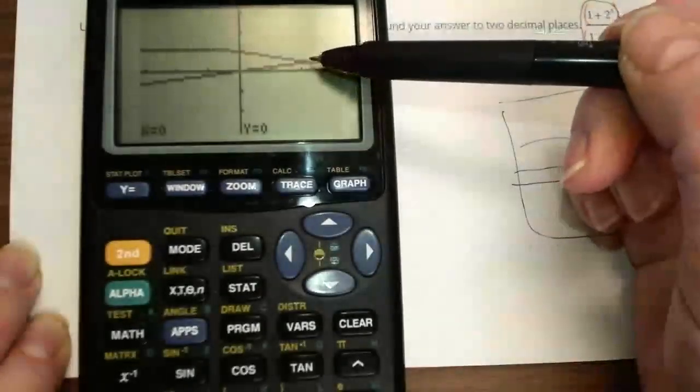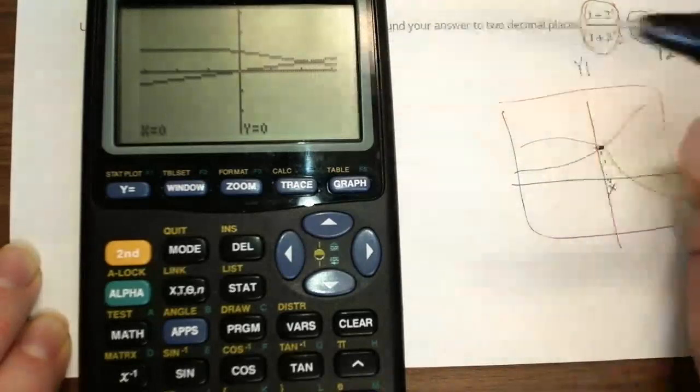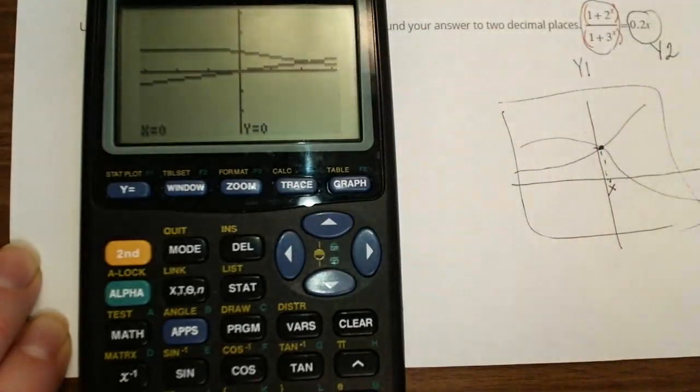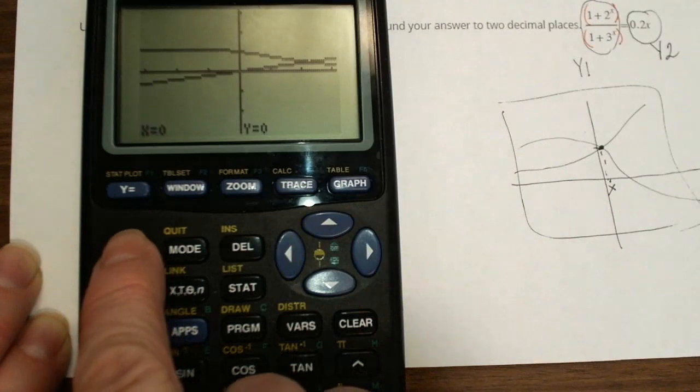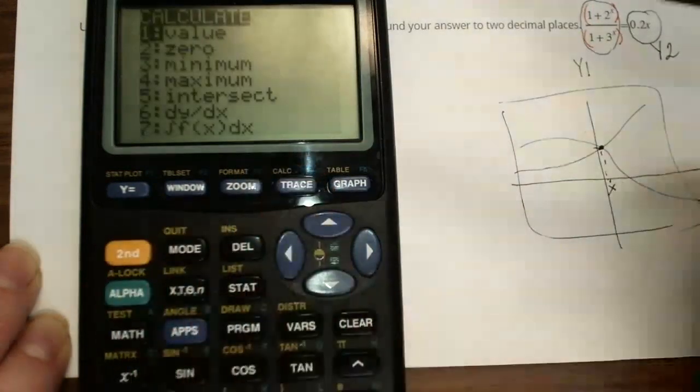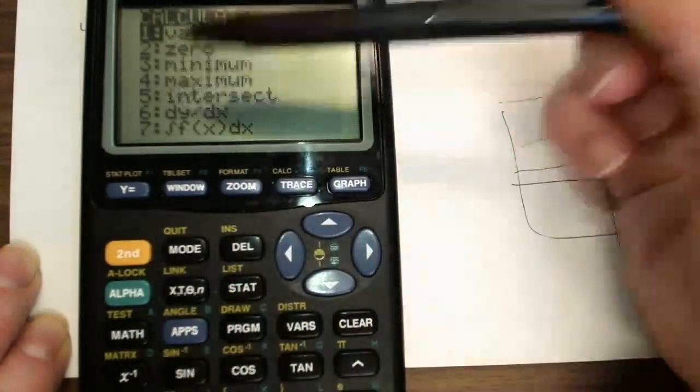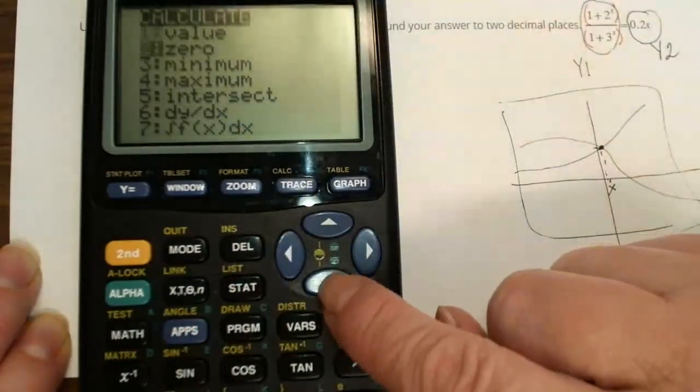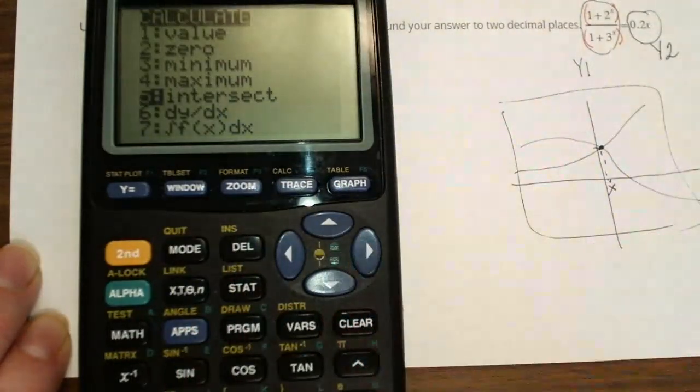And it's much easier to see where these two graphs intercept. Now you have to follow the following rules. Press Second, then Trace, then go down to five. Use this button, go down to five. Enter.